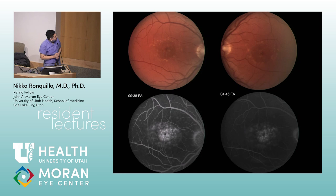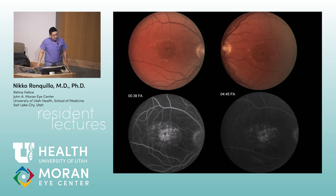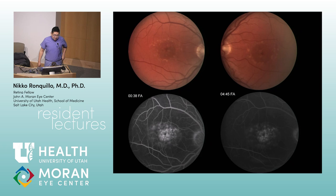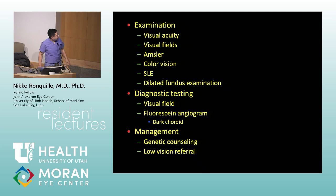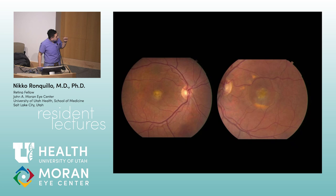Next — this is Stargardt disease (fundus flavimaculatus is the old term). FA shows dark choroid — that's the buzzword. Key question: is it leaking or staining? Staining — not like CME. Mutations: ABCA4 (primary), PRPH2, and ELOVL4. Autosomal dominant. PRPH2 is also associated with pattern dystrophy and adult vitelliform macular dystrophy.